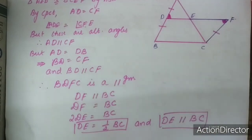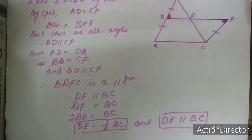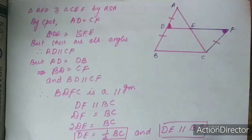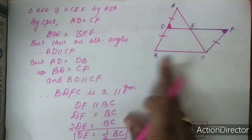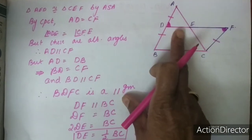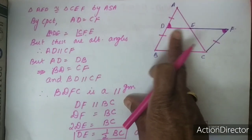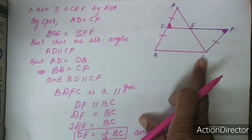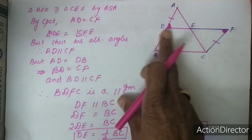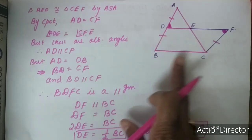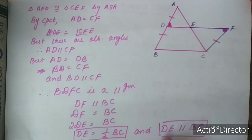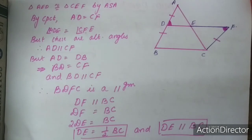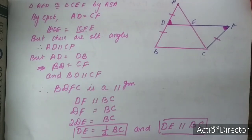So this is what the midpoint theorem states: if two midpoints are joined together in a triangle, then that line segment is parallel to the third side and also half of it. Hope you understood this theorem. Thank you.